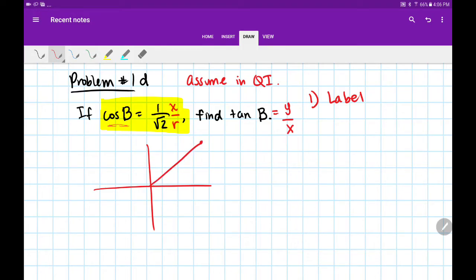As always, drop the perpendicular to the x-axis. So this would be our angle B. If x is 1, that's my horizontal piece, and r, or my hypotenuse, is √2.